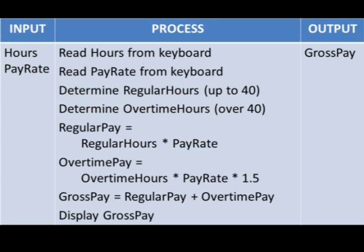In this case the inputs are hours and pay rate, and the output is gross pay. Once we know the input and the output, we need to decide how to get from input all the way to the output. So here we're going to read the hours from the keyboard, read the pay rate from the keyboard, determine the number of hours, determine the overtime hours, compute the regular pay, compute the overtime pay, and then compute and display the gross pay.